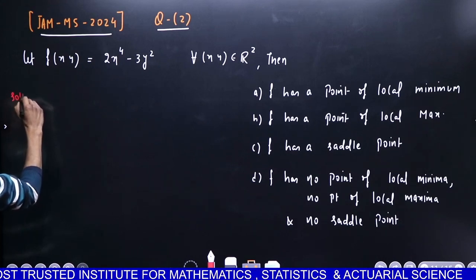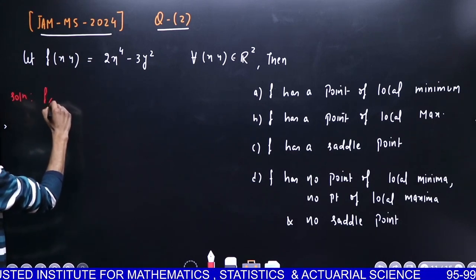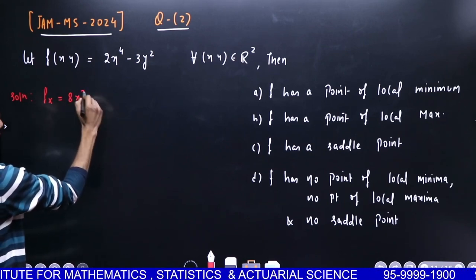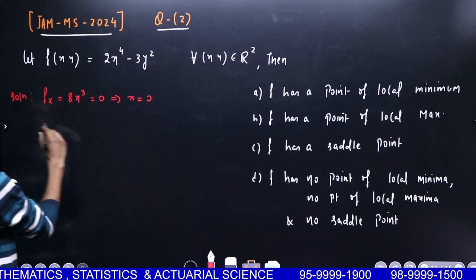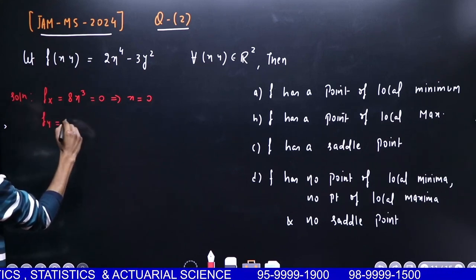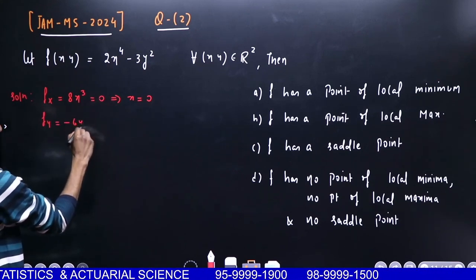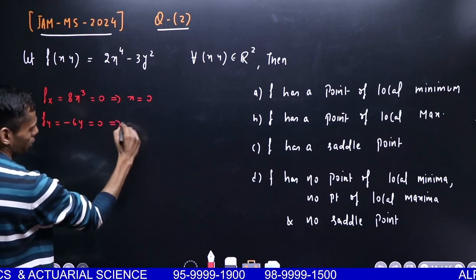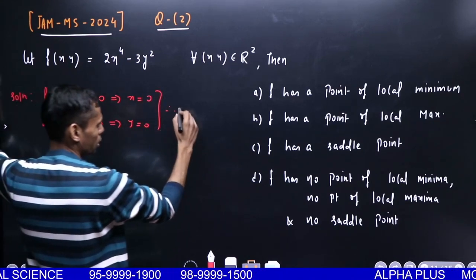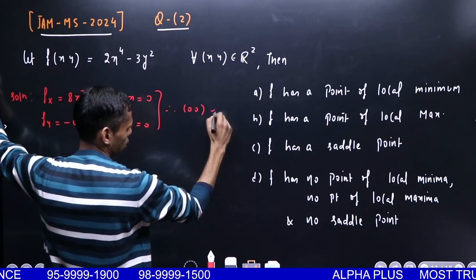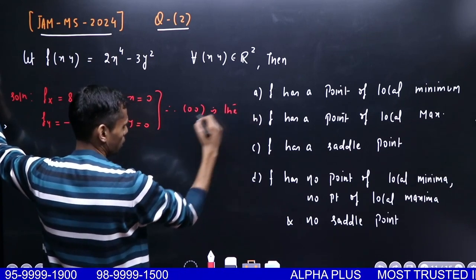To solve this, you need to compute partial derivatives. When you take the derivative with respect to x, you get 8x³. When you equate this to 0 to find critical points, x equals 0. When you take the derivative with respect to y, you get -3y², which when equated to 0 gives y equals 0. Combining these two, (0,0) is the only critical point.